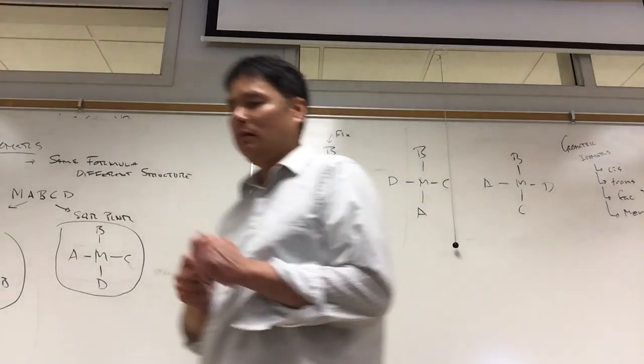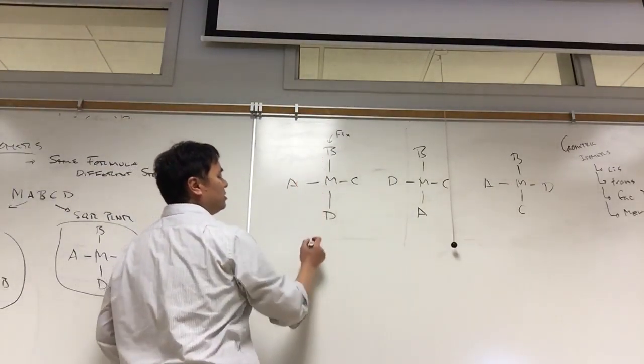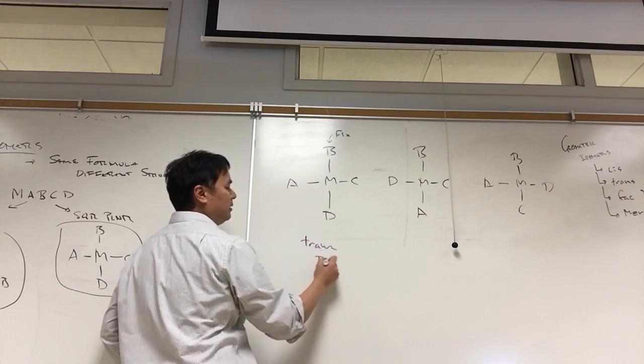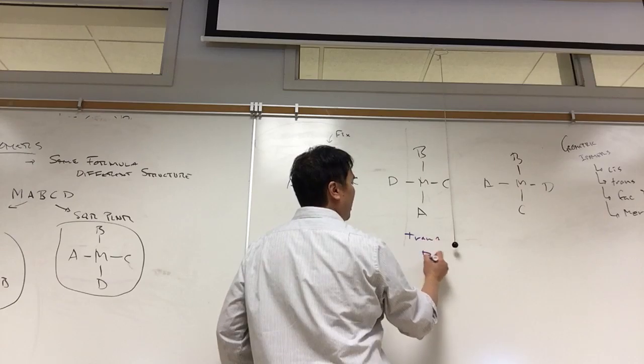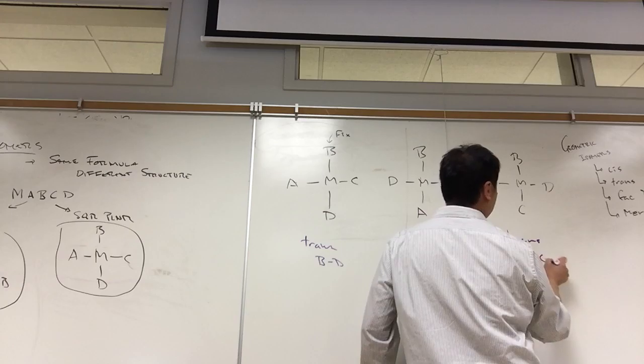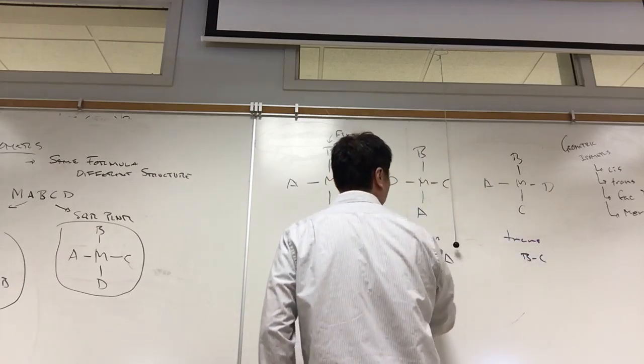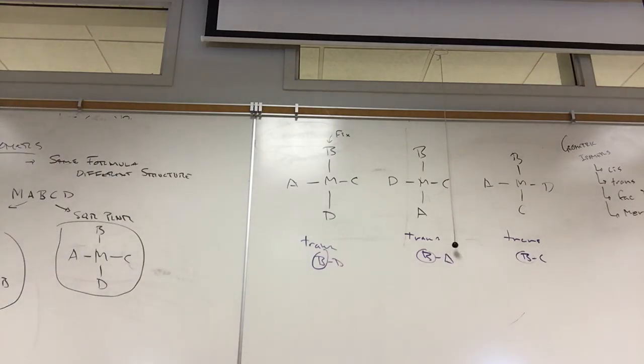Trans means opposite. And so what we could say is, this one, this could be trans BD, this would be trans BA, this would be trans BC. So we leave one fix, B we leave fix, and then we see we have three possible trans combinations: ACD. Does that make sense? All right, so you should have gotten three isomers for this.